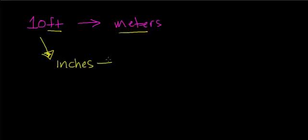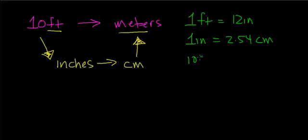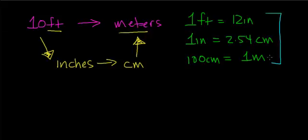I also know a direct relationship between inches and centimeters, and between centimeters and meters. Before you begin a problem like this — especially if you're stuck — write down all the unit relationships you know: 1 foot equals 12 inches; 1 inch equals 2.54 centimeters; 100 centimeters equals 1 meter. Now you have all your unit relationships right next to each other.